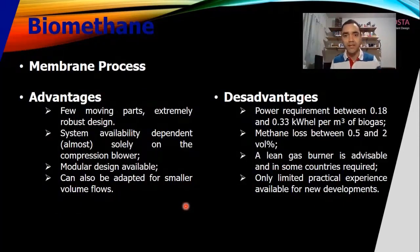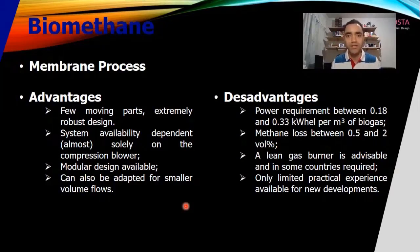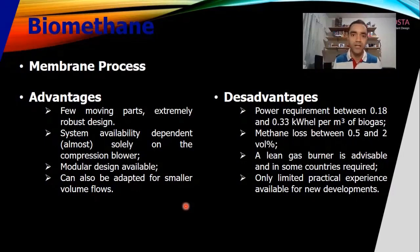Considering the compressor, we don't have moving parts in the membrane itself — you just need to have a gas with enough pressure to go in and out of the membrane. The availability depends on the compressor or blower, since it is our source of capturing the biogas. We can have a modular design, meaning that if you want to increase the plant capacity you just need to add more modules to your system, and with that you can improve the capacity of your plant.